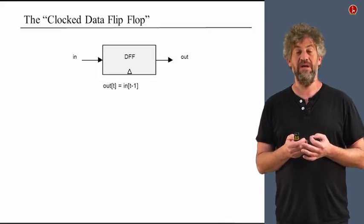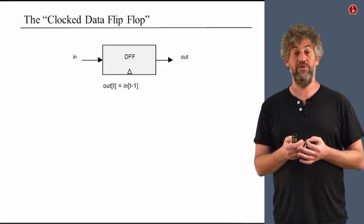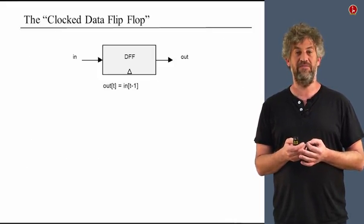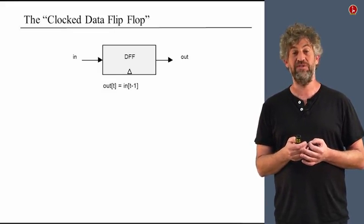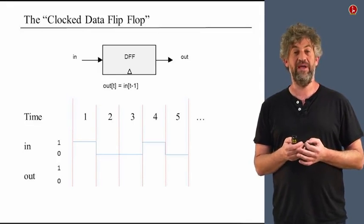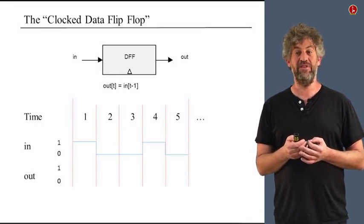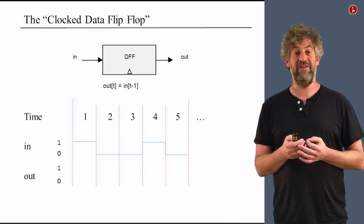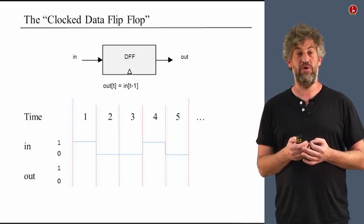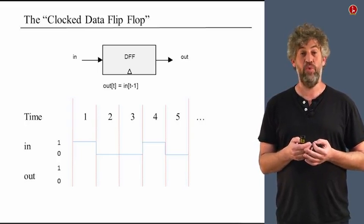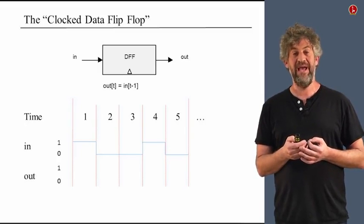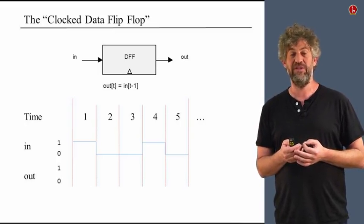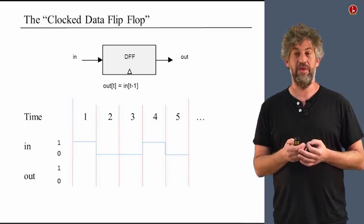The basic flip-flop we'll use in this course is called the clocked D flip-flop. It has a single input and a single output, and it simply remembers the input from the last time unit and outputs it in the next time unit. If we look at a timing diagram and our input starts at one in time unit one, then goes down to zero for time units two and three, and then goes up to one and back to zero — the D flip-flop at any time unit returns the value that was at its input in the previous time unit.